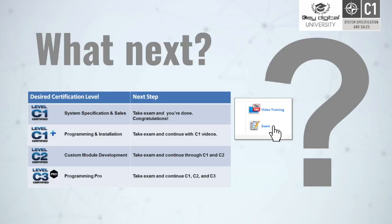So you may be wondering what's next for you. If you are wanting to stop at the C1 system specification and sales certification level, just click the exam link icon right next to this video training link that you've selected. Take that exam, pass with an 80% or higher, and you are done — congratulations and thank you. If you wish to continue, we're going to get into programming and installation next for your C1 Plus programming and installation certification.